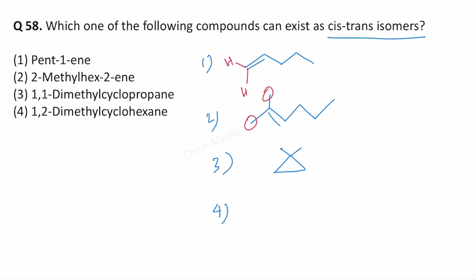And then number 4, we have 1,2-dimethylcyclohexane. This molecule can exhibit cis-trans isomerism. We have two chiral centers here. However, this is a meso compound.